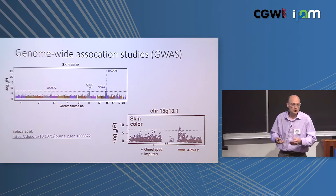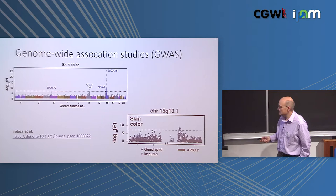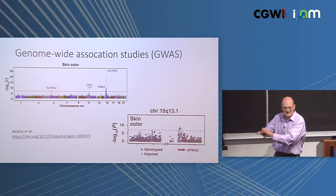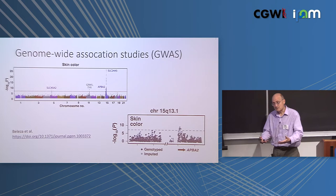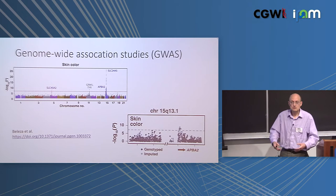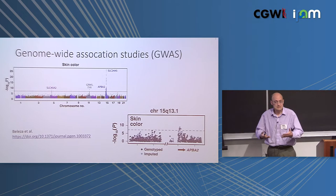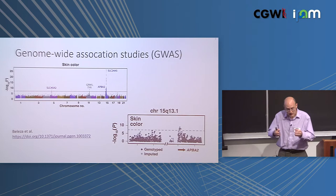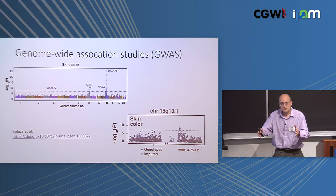In the lower right panel is a blow-up of one region around the APBA2 gene, where markers are divided into genotyped markers on the SNP array and imputed markers. The reason we're interested in imputation is it allows us to test an order of magnitude — perhaps two orders of magnitude — more markers. And in this example, the largest signal comes from an imputed marker. Imputation gives a much more fine-grained view of the architecture in a region and makes it more likely we're testing the actual causal variant.